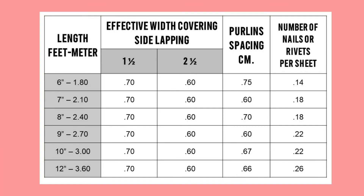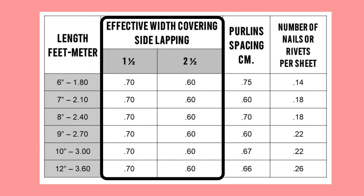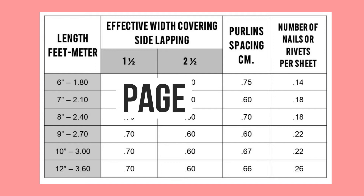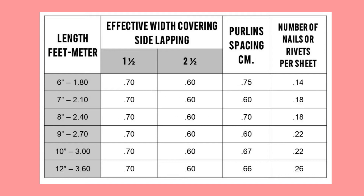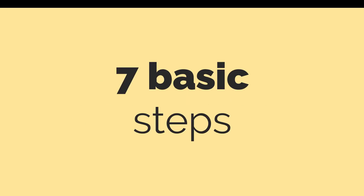Here is the table for effective covering, showing varied standard sizes of roofing sheets, effective side lapping, and recommended purlin spacing. You can find this table on page 206 of Max Fajardo's 3rd edition of Simplified Construction Estimate. Since we already know the basic roofing considerations, let's proceed to the estimate. I, with my other groupmates, will be discussing estimates of GI roof and its accessories. There are seven steps to solve an estimate of a GI roof.